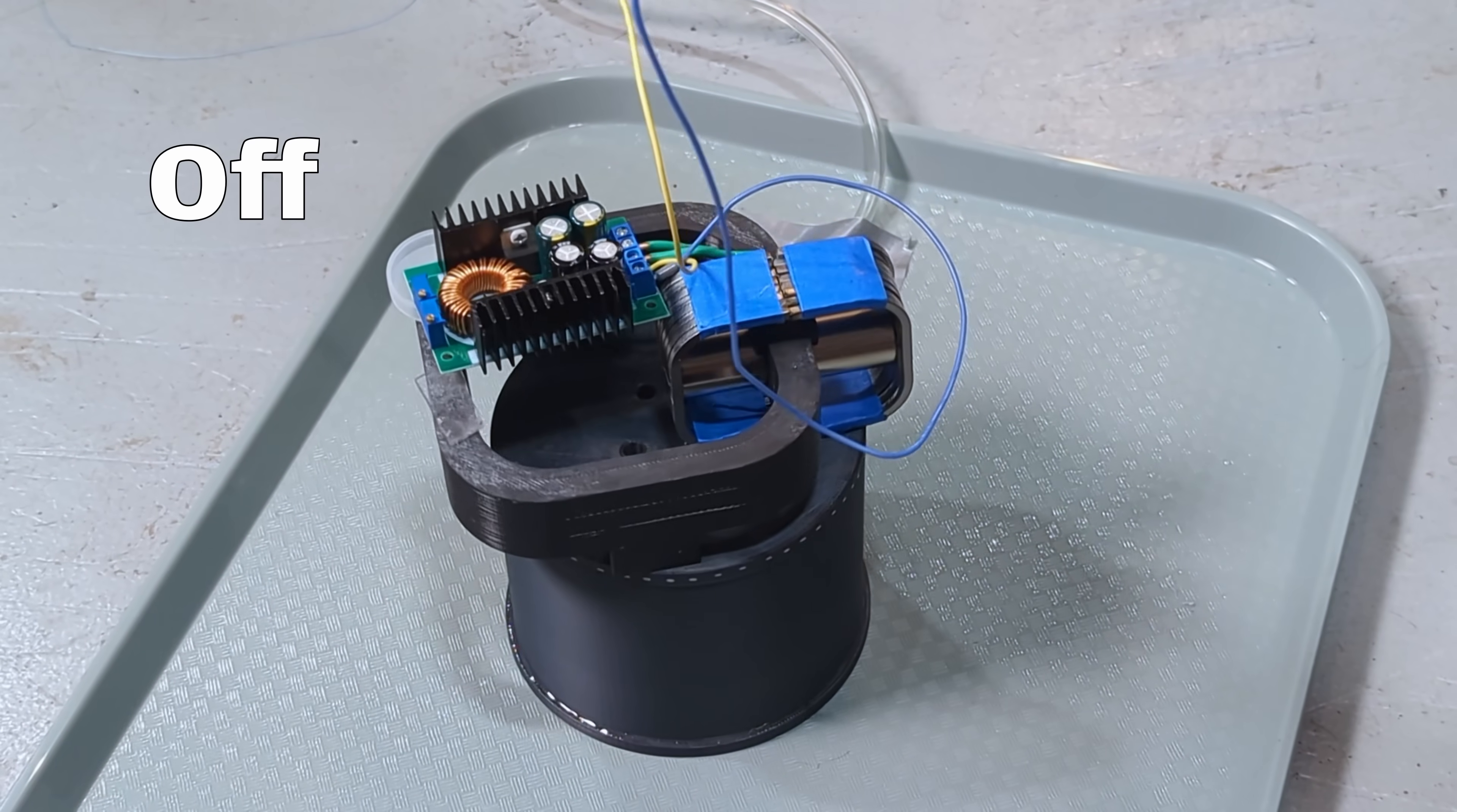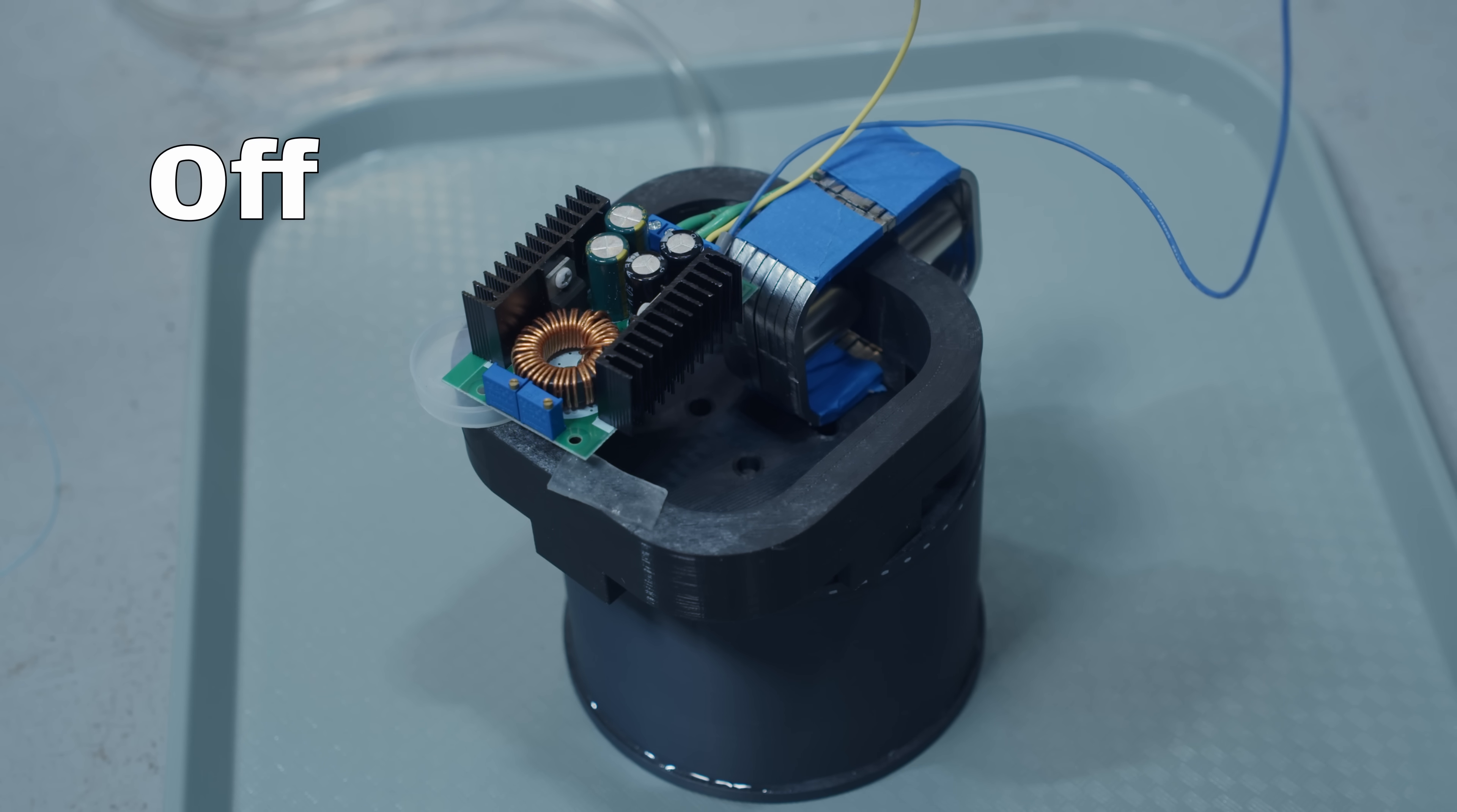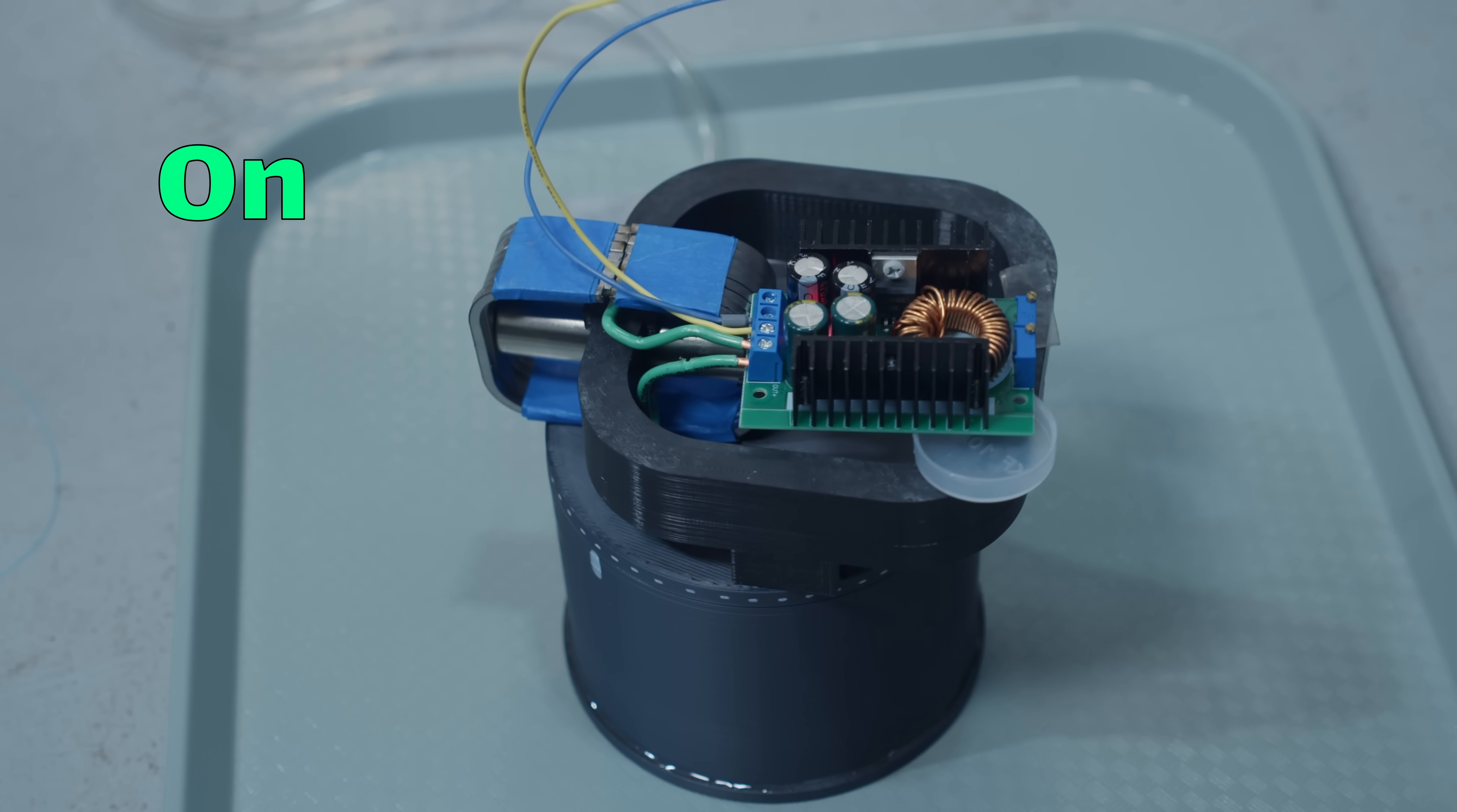It's also a complicated design space to optimize for. There are frictional fluid losses, which change depending on the geometry of the channel. There's joule heating losses, pressure versus flow, magnetic strength,